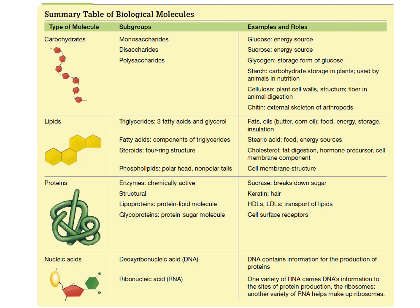Fats and lipids — yes, we have triglycerides for energy storage, but lipids are important for phospholipids in cell membranes, for making signals like steroids, and fatty acids are even used to generate pain signals. Proteins are the doers — either structurally as fibrous proteins, or catalytically active as enzymes, or as components in cell membranes like channels and receptors.